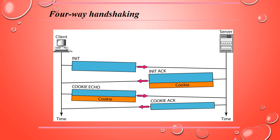To guarantee the cookie's integrity, the server creates a digest from the information and its own secret key — similar to cryptography. The information and the digest together make the cookie sent to the client in the second packet. When the cookie is returned in the third packet, the server recalculates the digest. If the digest matches the one that was sent, then the cookie has not been changed by any other entity.